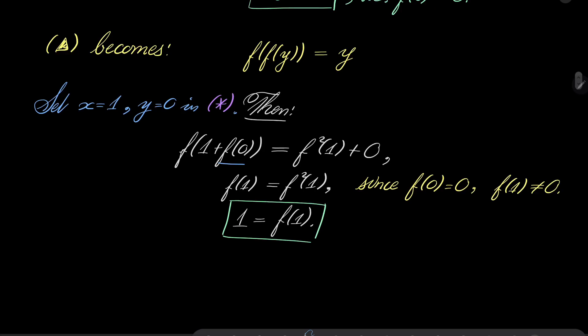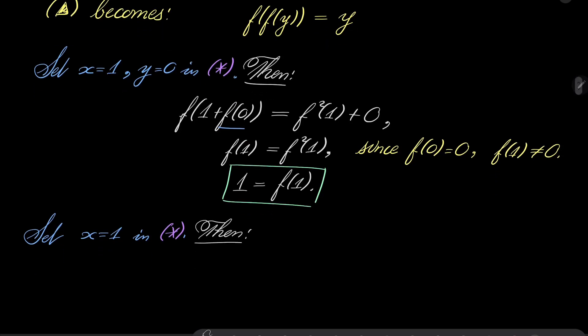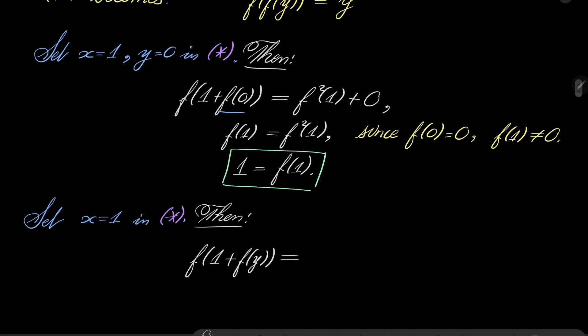And now let's set finally, let's set just x to be 1 in our condition asterisk. Then, we have the following equation: f of 1 plus f of y equals f squared of 1 plus y.